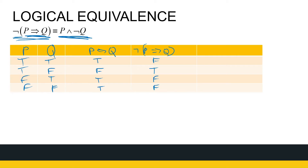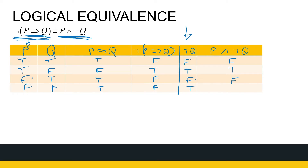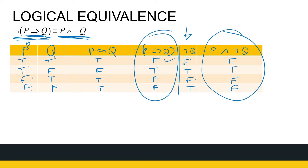For the right-hand side, P∧¬Q: ¬Q is false, true, false, true. Then P∧¬Q gives: false, true, false, false. Make sure you know which columns you're working with. Both columns match, so ¬(P→Q) is logically equivalent to P∧¬Q. This also tells us what the negation of an implication looks like.